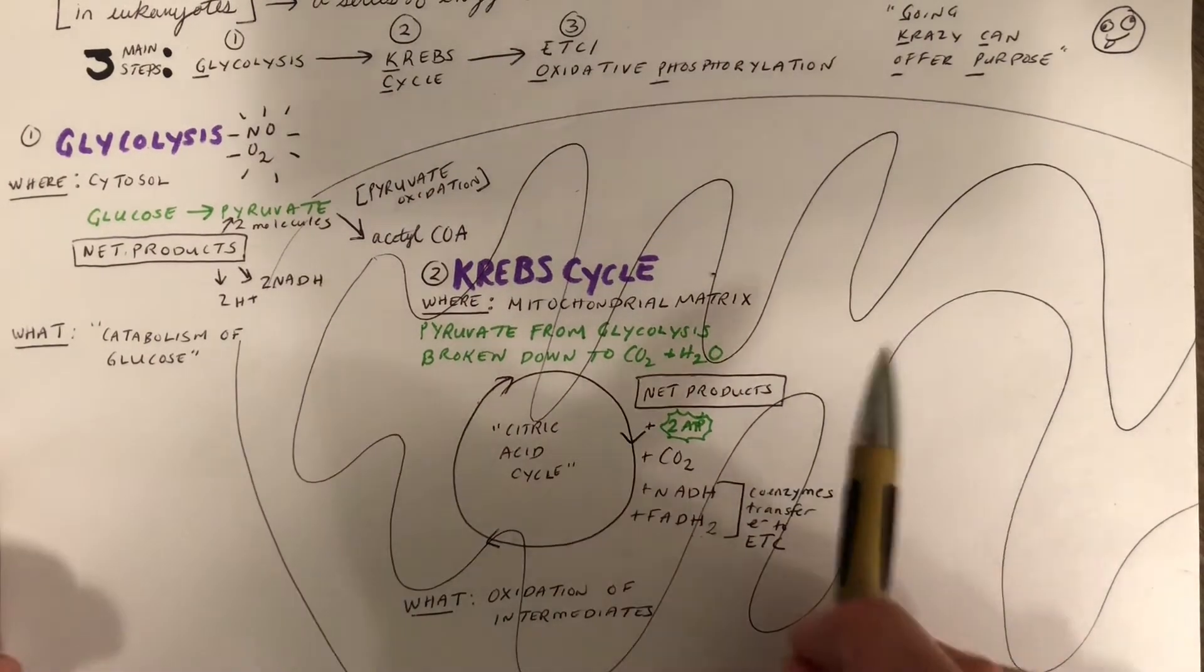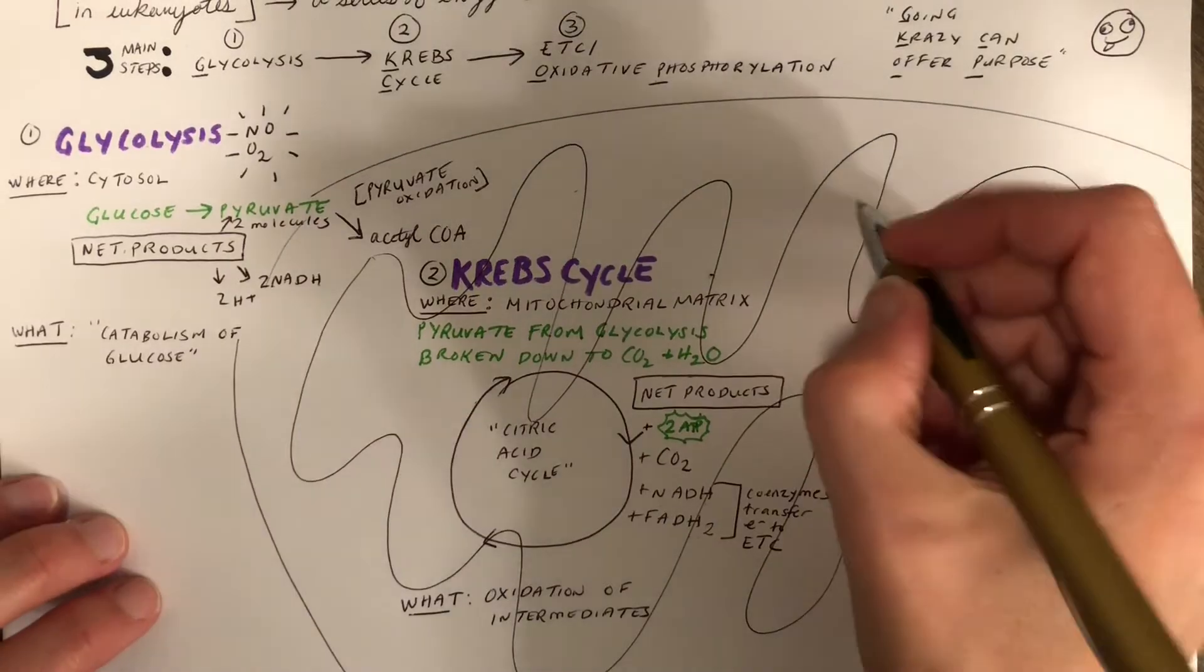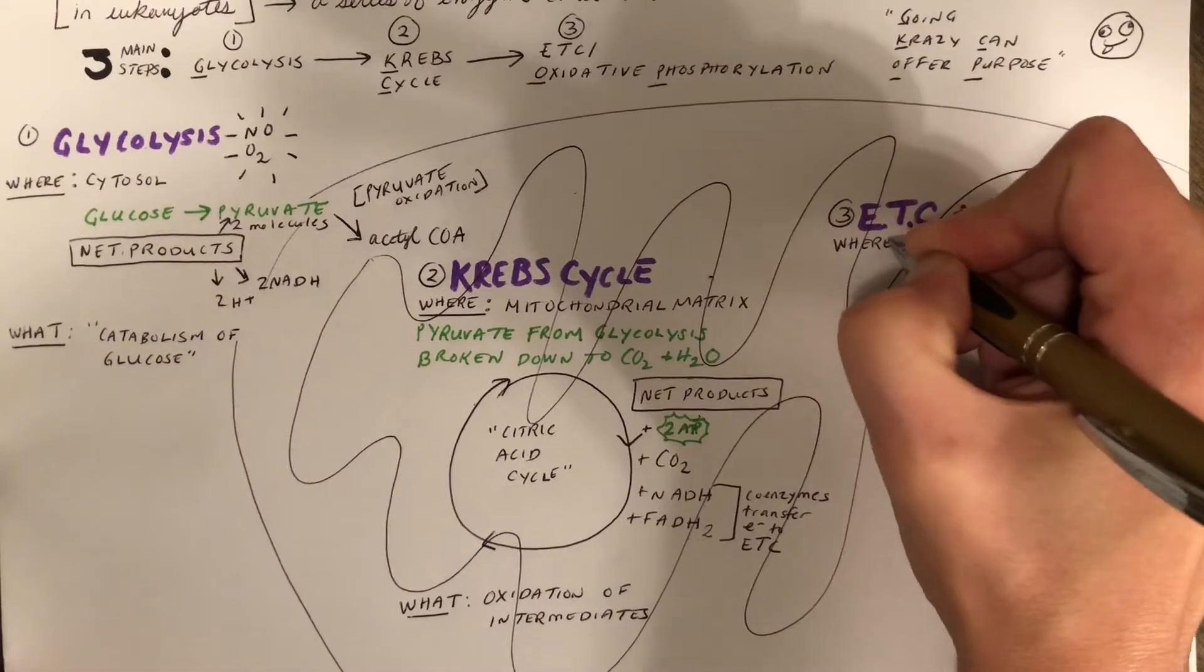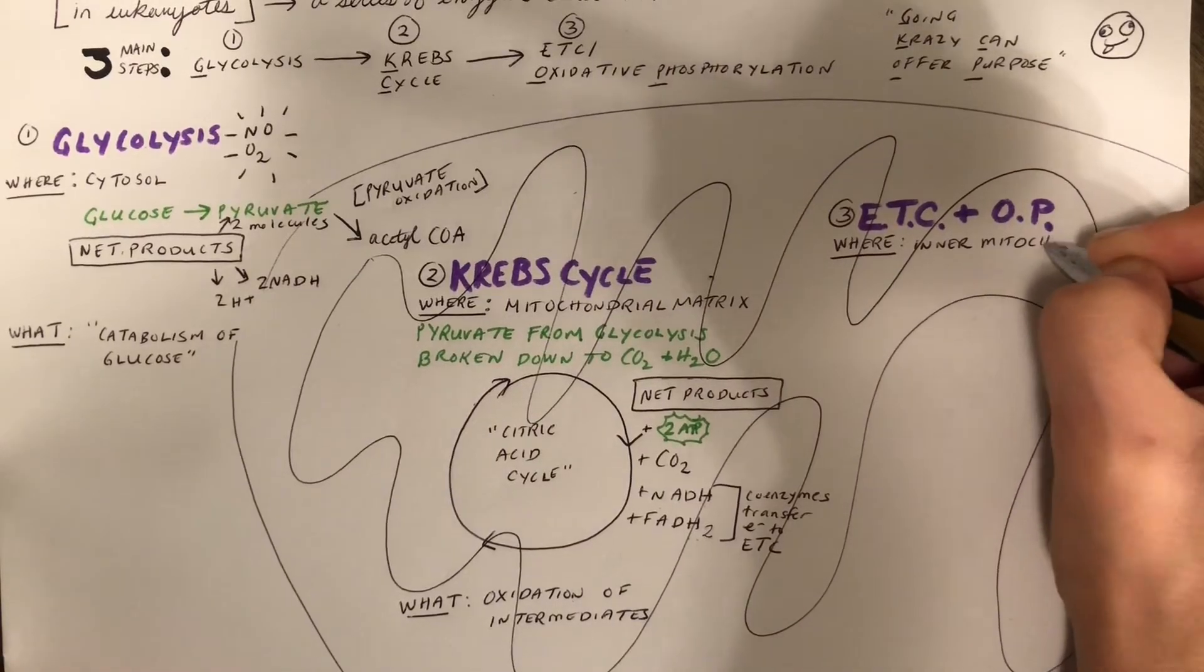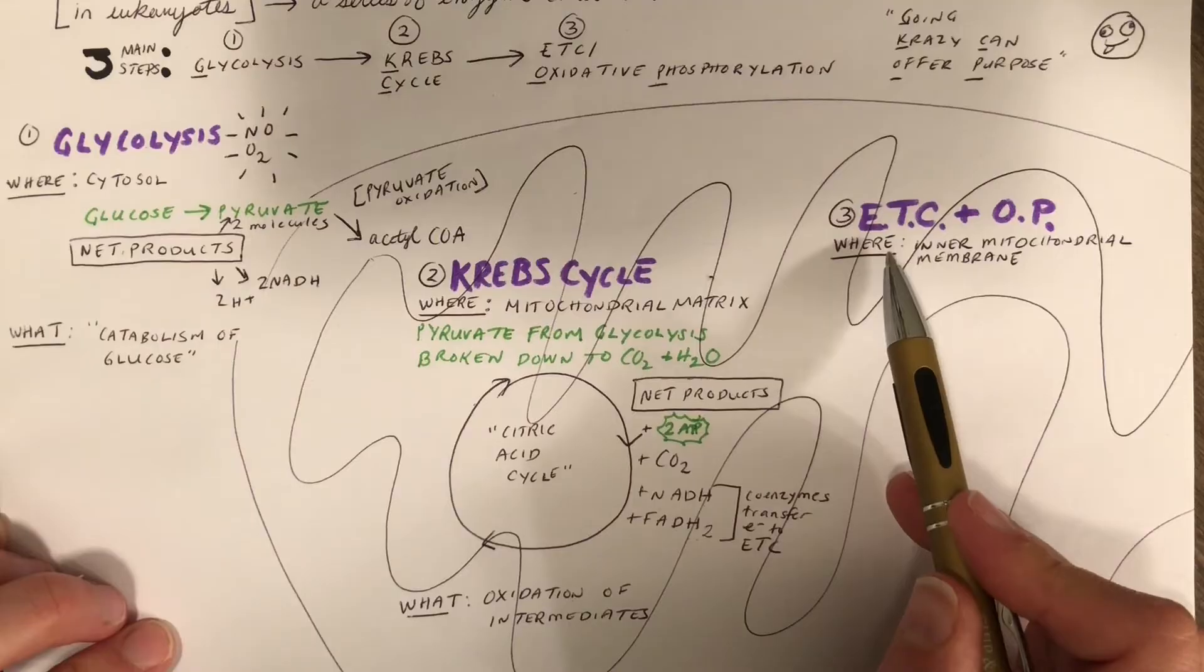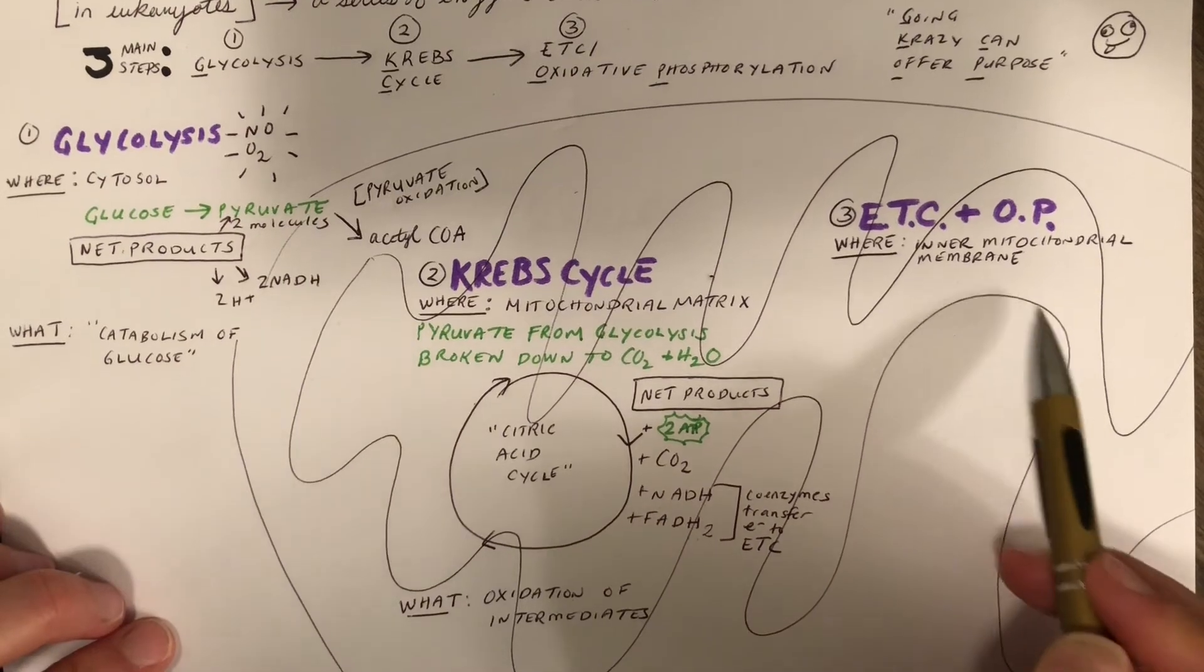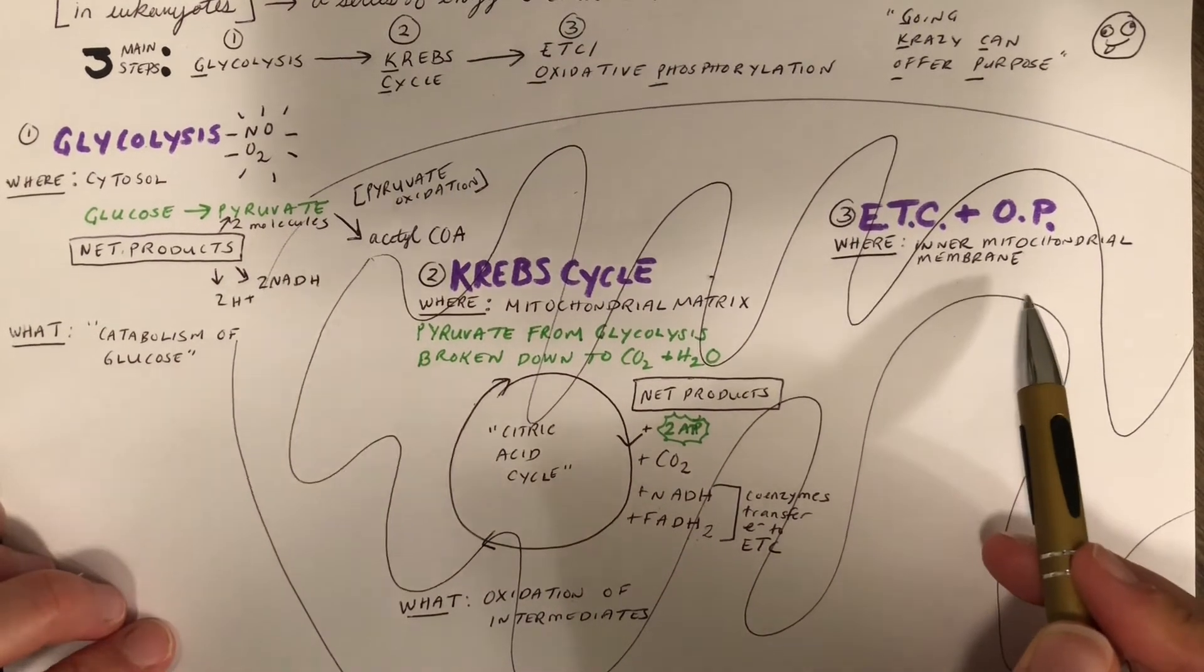All right, now let's move on to the final step, the electron transport chain and oxidative phosphorylation. It's important to remember that this last step happens across a layer, the inner mitochondrial membrane. We need this barrier here in order to set up the gradient that's later going to go into the process of generating ATP.